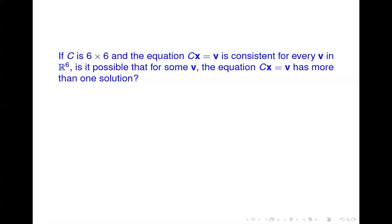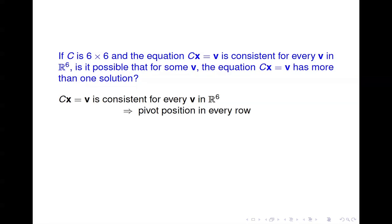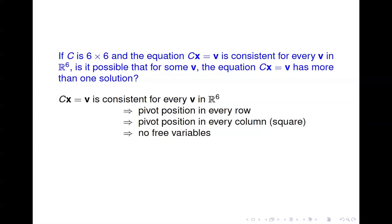Next: we have a six-by-six matrix C, and the equation Cx = v is consistent for every v in R^6. If Cx = v is consistent for every v, then there must be a pivot position in every row. Since C is a square matrix, a pivot position in every row also means a pivot position in every column — no free variables — so no system will have infinitely many solutions; every system has a unique solution.